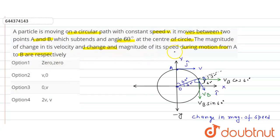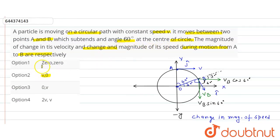So the magnitude of change in velocity is v and the change in magnitude of speed is 0. Therefore, option 2 is the correct answer. Thank you.